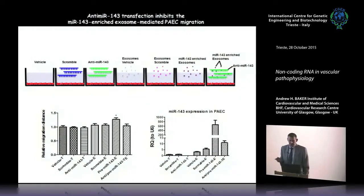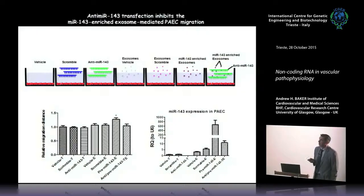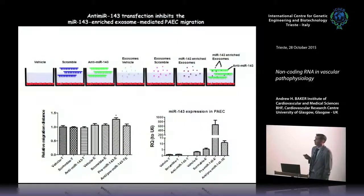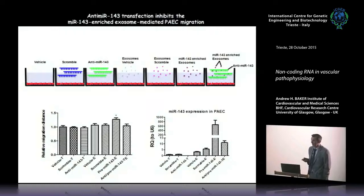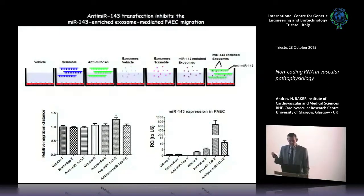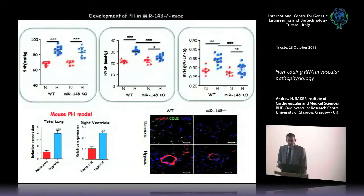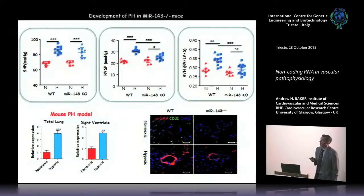Reviewers asked for a final proof experiment: recipient endothelial cells were given anti-mir-143, then exposed to vehicle exosomes, scramble exosomes, miR-143-enriched exosomes, or miR-143-enriched exosomes onto cells pre-loaded with anti-mir-143. The anti-mir blocks the pro-migratory effect of miR-143-enriched exosomes, proving it was the transferred miR-143 responsible for the endothelial cell migratory phenotype. In vivo, miR-143 knockout mice show similar blunting of right ventricular systolic pressure, right ventricular hypertrophy, and vascular remodeling as miR-145 knockouts.